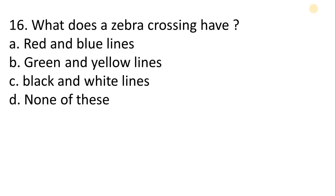What does a zebra crossing have? A. Red and blue line. B. Green and yellow lines. C. Black and white lines. D. None of these.